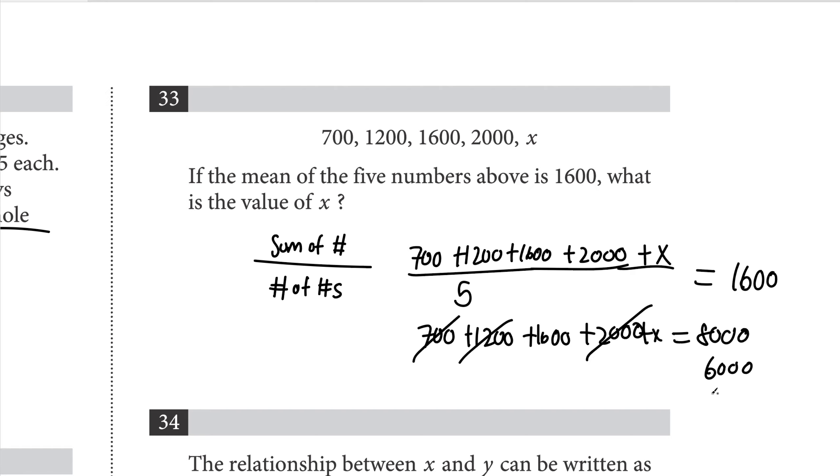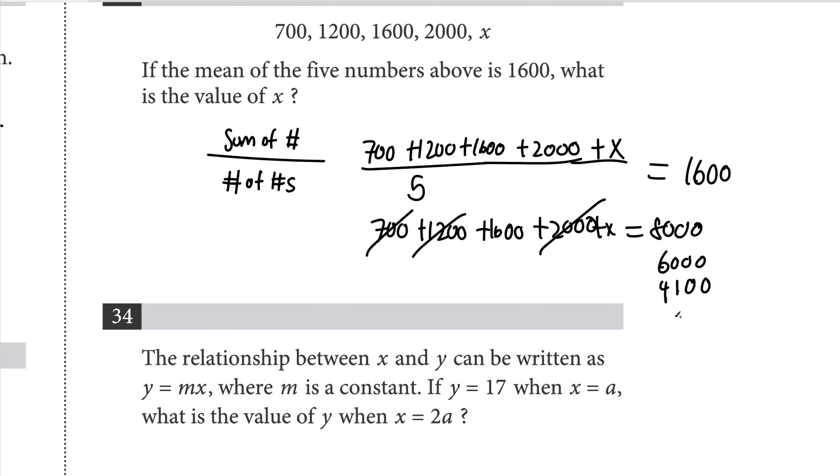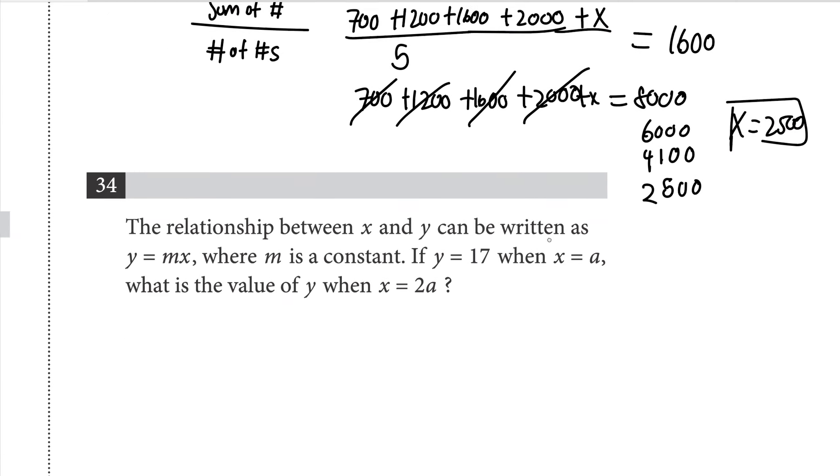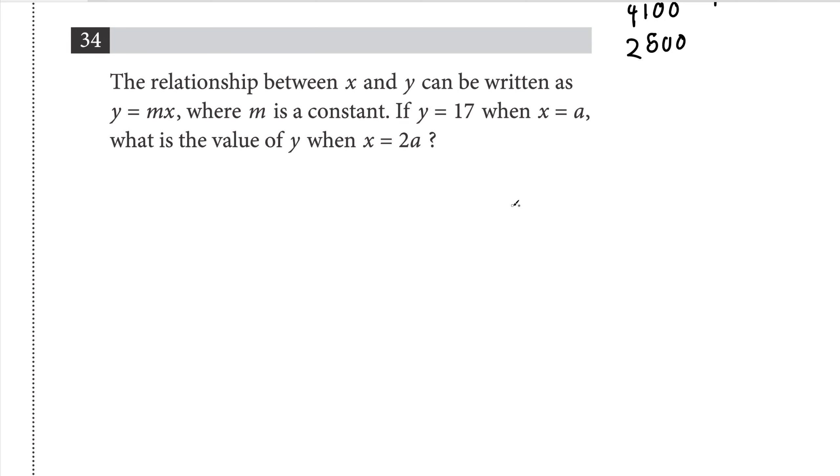So then we get 8,000 minus 2,000, that's 6,000. Minus 1,600, that's 4,100. Minus 1,200, that's 2,500. So x equals 2,500.